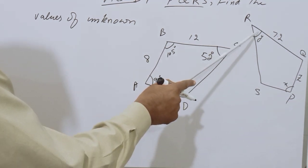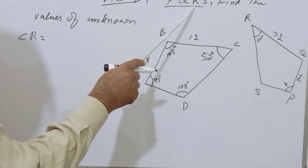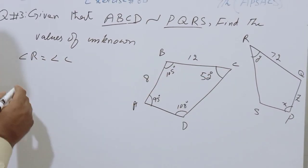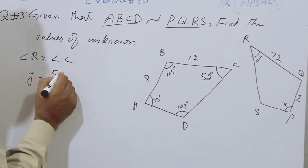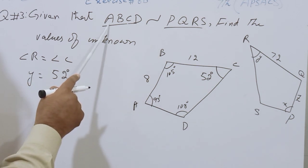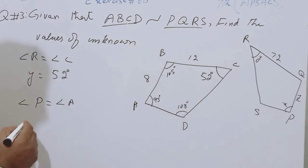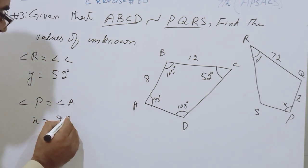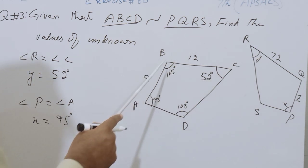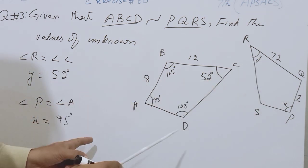Students, we have to find the value of Angle R and Angle P. Angle R is written at the third place, and at the third place in the correspondence it is C, so Angle R equals Angle C. Angle R means Y, and the value of Angle C is 52 degrees. X is written at point P, and P is at the first place on the right side, so at the first place there is A. So Angle P equals Angle A, the value of Angle P is X, and the value of Angle A is 95 degrees, so the value of X is 95 degrees. Now we have to find the value of Z, which is unknown, with two sides given in one quadrilateral and one side in the other.